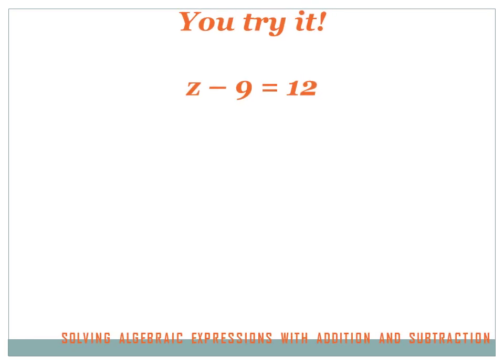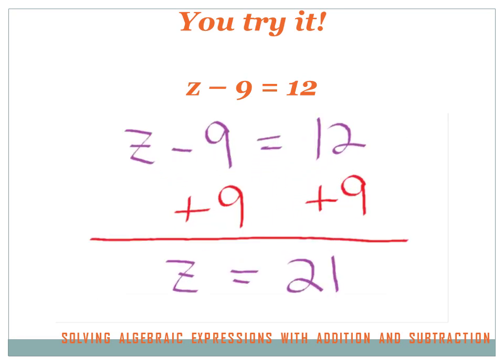Hit the pause button, solve this problem, then hit the forward button to see the answer. z minus 9 equals 12. I've got to get rid of a minus 9, so the opposite of subtracting 9 is adding 9. I add 9 to both sides. On the left side, my minus 9 and plus 9 cancel each other out and leave just z. On the right side, 12 plus 9 equals 21. So the solution is z equals 21.